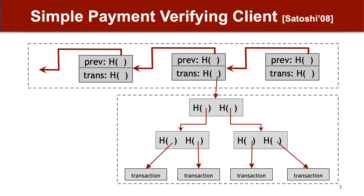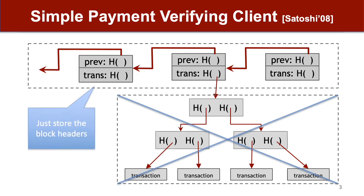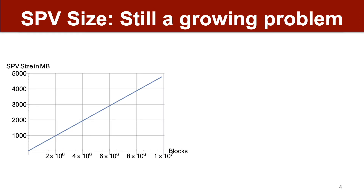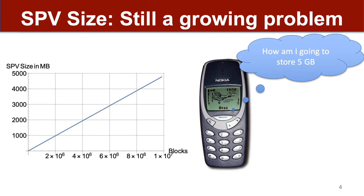Satoshi actually foresaw this problem and invented a so-called SPV client. This client only stores the block headers instead of storing all blocks and all transactions. However, the size of the SPV client is still linear in the total number of blocks on the blockchain. For Ethereum, this results in an SPV client that needs to download and store five gigabytes of data.